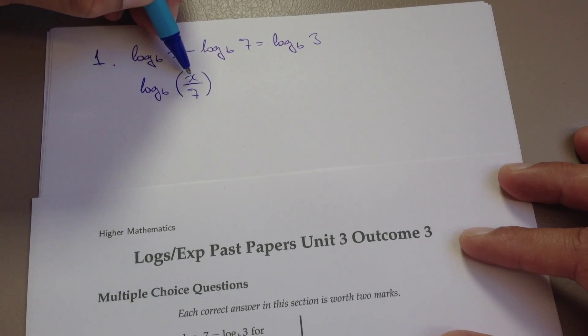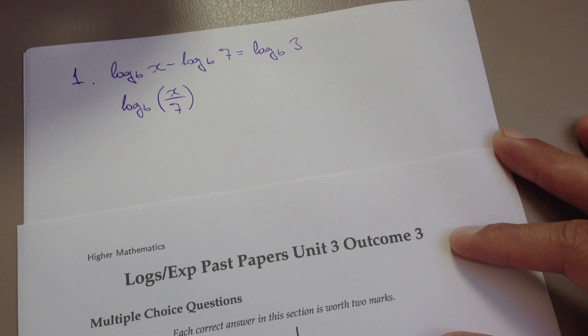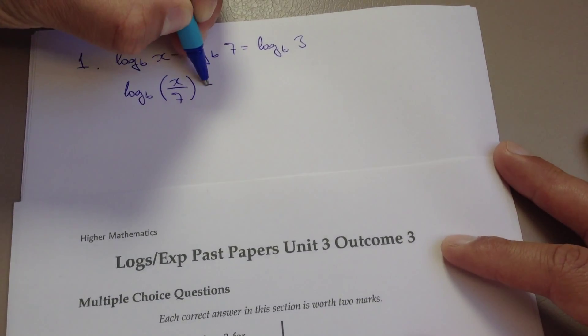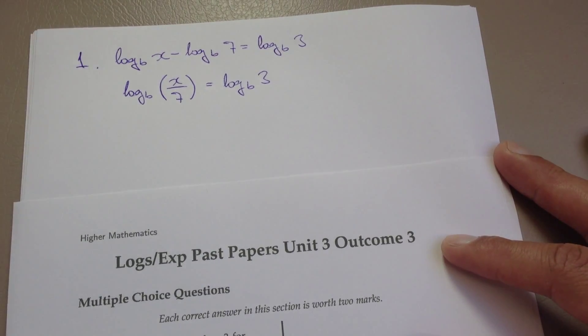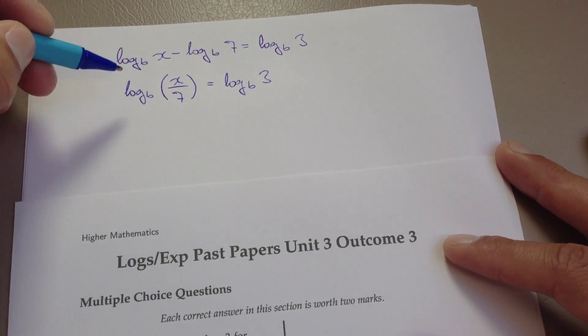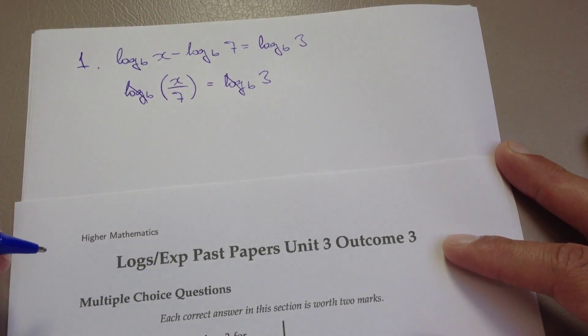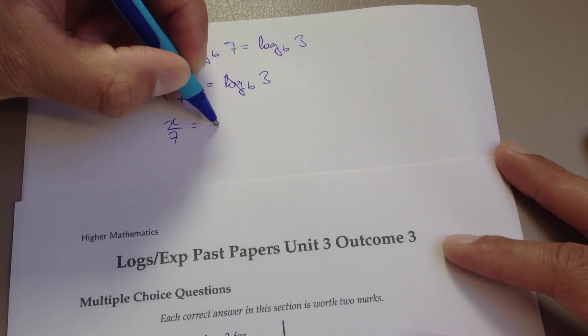And all you effectively do is do x over 7. Had this been a plus, it would then be 7 times x or x times 7. And then that just equals log to the base b of 3. And what we can do is, because we have a log to the base b on either side, we can simply just get rid of it, leaving x over 7 equals 3.